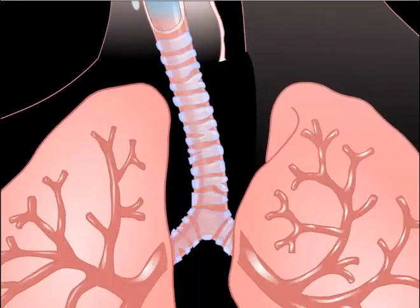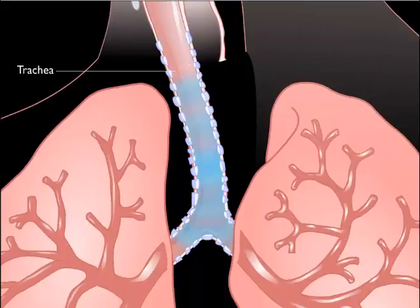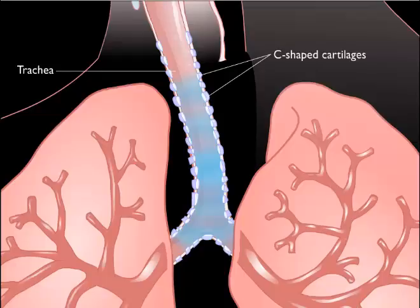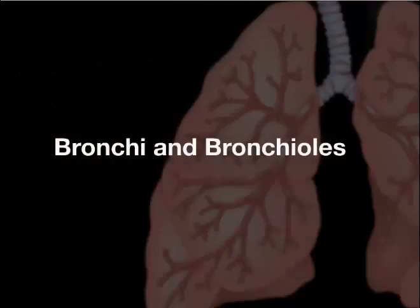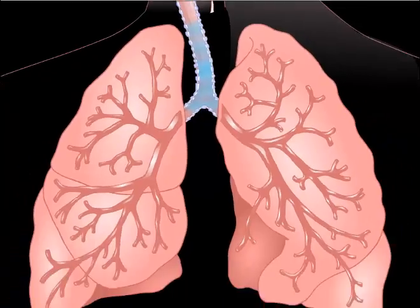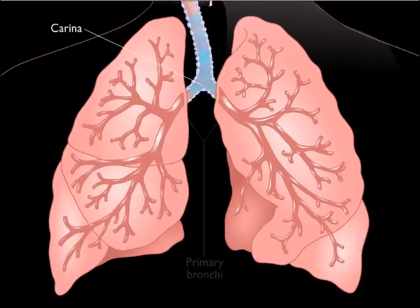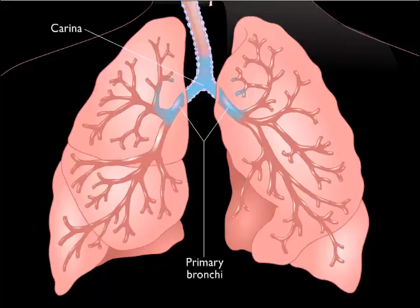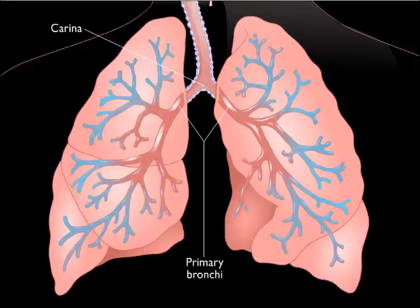Air next enters the tracheobronchial tree. The trachea, a 10 to 12 centimeter long tube supported by C-shaped cartilages, maintains an open passageway to and from the lungs. The trachea divides into two primary bronchi, which as they enter the lungs continue to divide into smaller and smaller bronchi, and ultimately into terminal bronchioles.